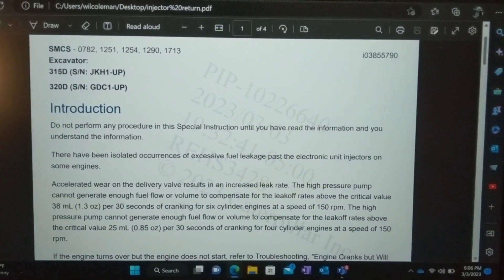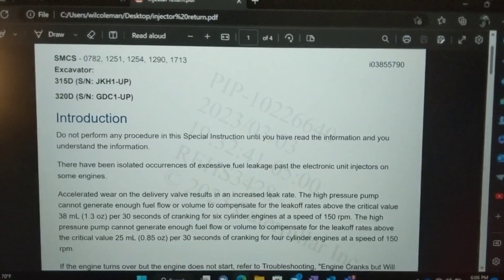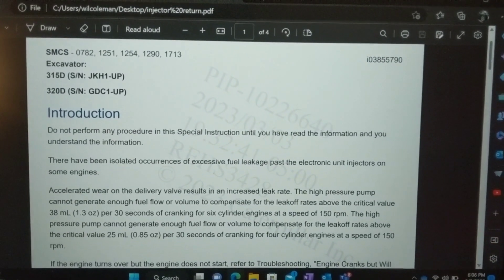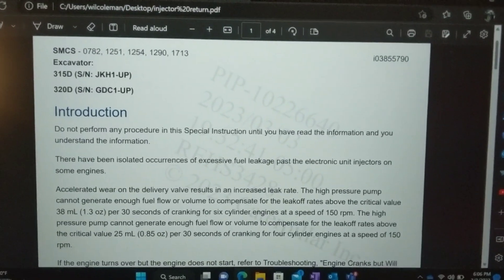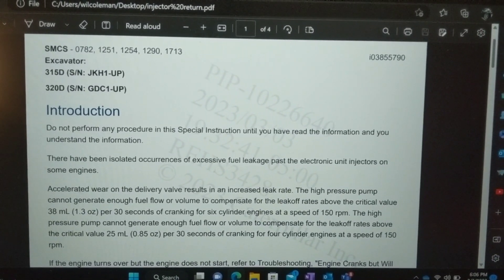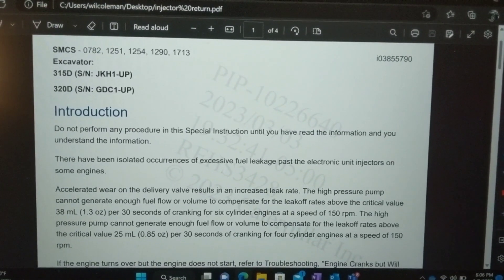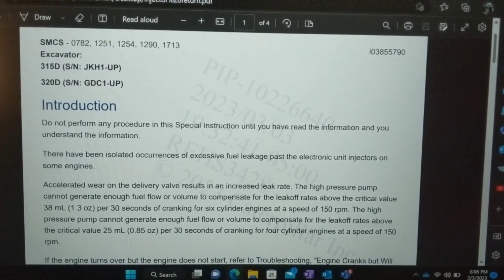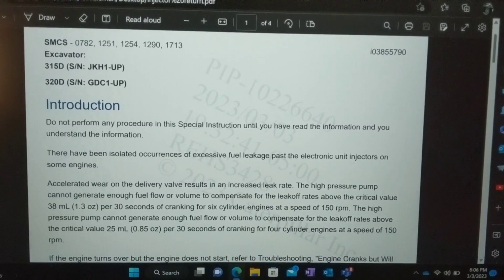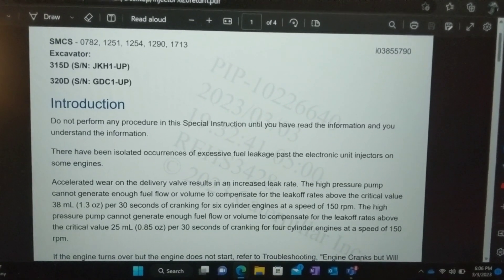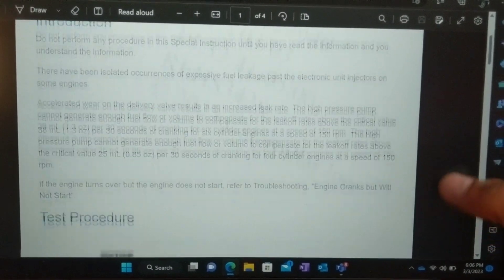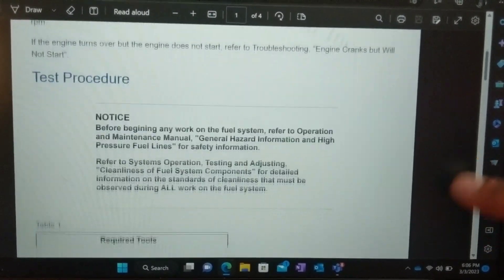Whatever that manufacturer deems as a threshold value, you judge off of that. But for this particular Caterpillar here, 1.3 ounces for 30 seconds of cranking or less as far as fuel return rate goes is acceptable. Anything over that would show that you have an injector issue. Alright, so I'm just going to go through this procedure really quick.